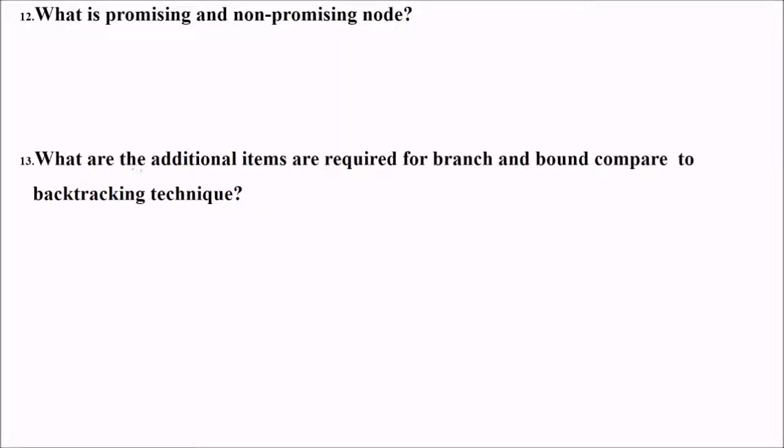What is promising and non-promising node? A node in a state space tree is said to be promising if it corresponds to a partially constructed solution that may still lead to a complete solution. Otherwise, the node is called non-promising.